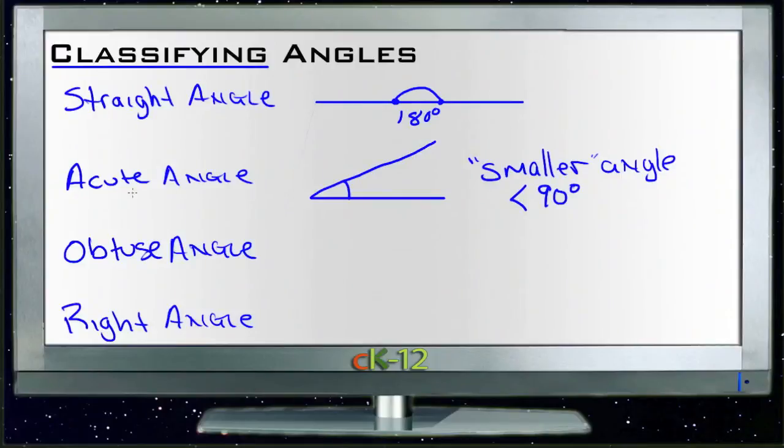An obtuse angle is an angle that is bigger than that. An obtuse angle is a line that is larger than 90 degrees. So maybe one that kind of goes off like this. This angle here would be greater than 90 degrees, so it would be a large angle.